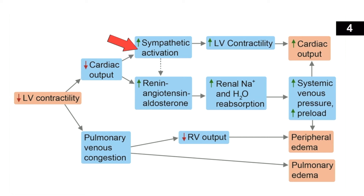The second major compensatory mechanism is activation of the renin-angiotensin-aldosterone system. The dashed line on the diagram shows that sympathetic activation also activates RAAS. Let's pause and review the RAAS: renin is an enzyme made in the kidneys, and one stimulus is the sympathetic nervous system stimulating beta-1 receptors on the kidneys, telling them to secrete more renin.